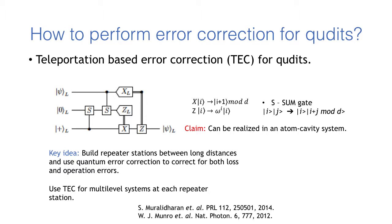So how do we perform error correction for loss and operation errors on qudits? Here we have generalized teleportation based error correction for multilevel systems using a sum gate which acts on i and j as i plus j mod d. The incoming state comes with loss and operation errors and the logical qubit leaves the circuit with errors corrected.